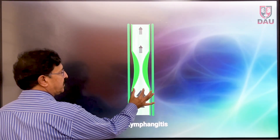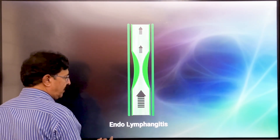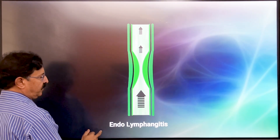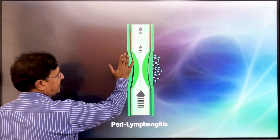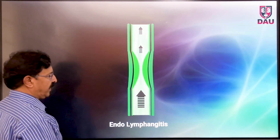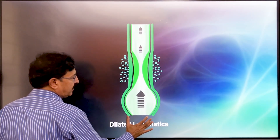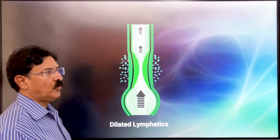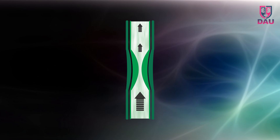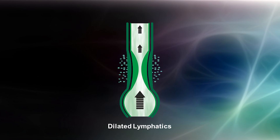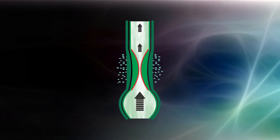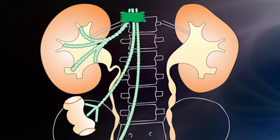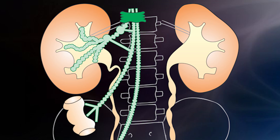As a result, chyle cannot flow through the occluded passage and the lymphatics below become dilated. If a patient already has some degree of obstruction in the lymphatic-chylous pathways and then suffers another acute attack of filariasis, the resulting endolymphangitis and perilymphangitis cause even greater obstruction, a sudden increase in lymphatic hypertension, and an episode of chyluria.